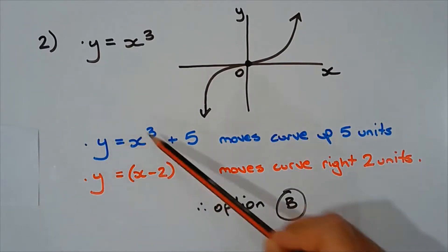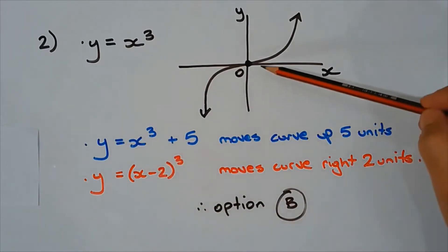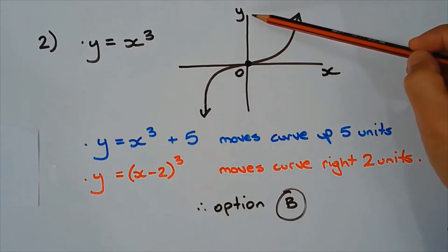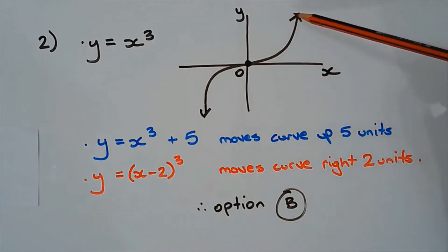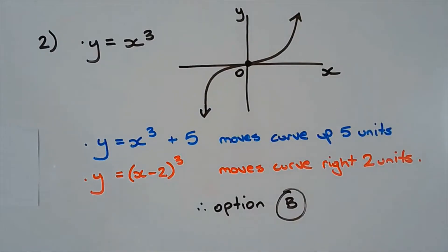Combining the two, the curve moves upward by 5 and to the right by 2. So the answer is option B.